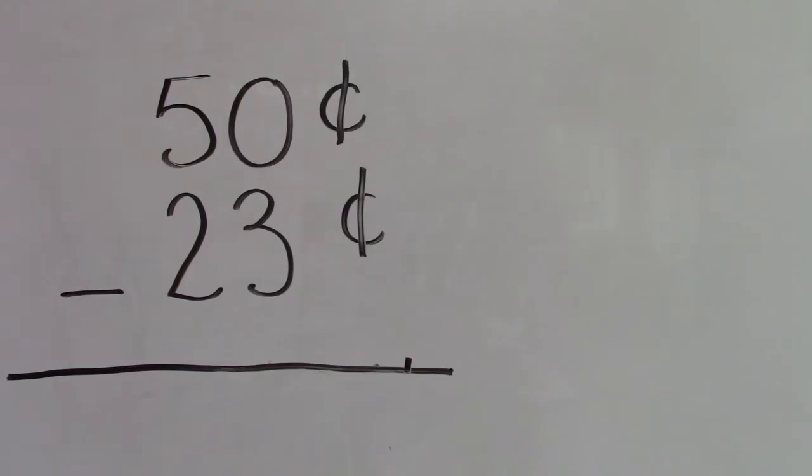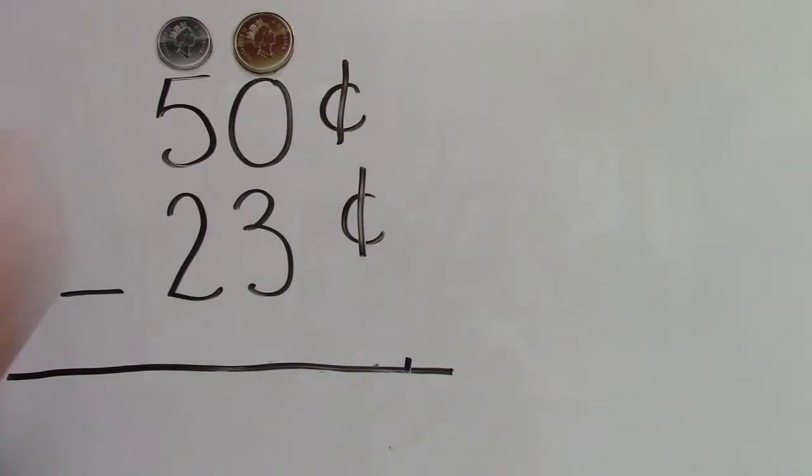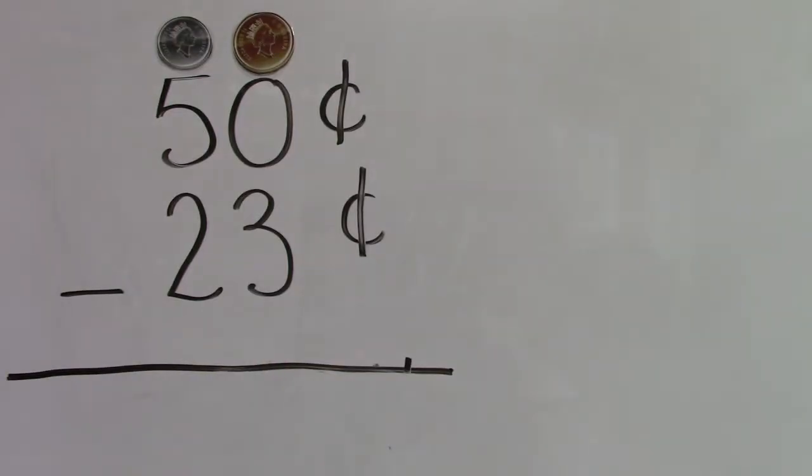Let's take a look at this question. Fifty cents take away 23 cents. In this question the five and the two are in the tens place or the dimes place. The zero and the three are in the ones place or the pennies place. If we have zero pennies and we try to take away three, oh dear, we'll be stuck won't we? We won't have enough pennies to take away.